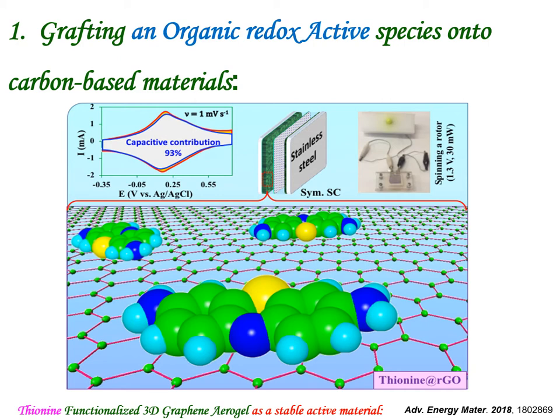Thionine was conjugated to graphene aerogel via pi-pi stacking interaction. Thionine, as a redox active dye, intercalates between the graphene aerogel nanosheets and is tightly stacked on them. The rationally designed thionine supercapacitor offers exceptional capacitive performance in addition to superior energy storage capability. Such a design mitigates leakage of redox moiety out of the active materials.